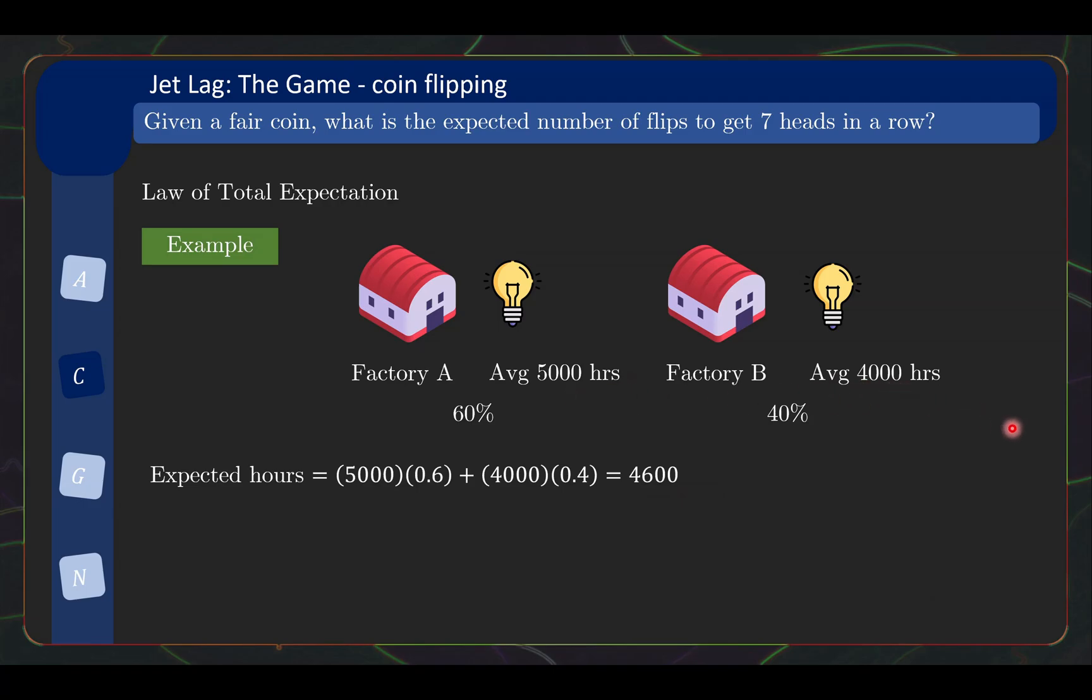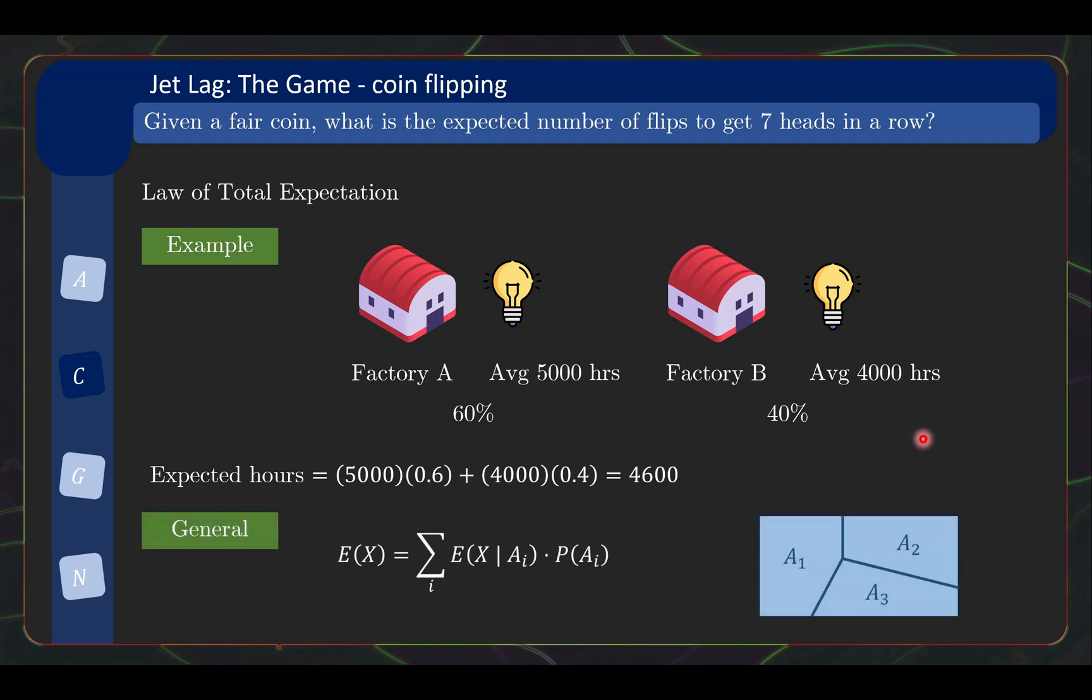So hopefully that is pretty believable. And in general, the law of total expectation says the following. So let's say this is your space of possible outcomes. In this case, outcome is whether light bulb is factory A or factory B. In general, you have outcomes A1, A2 and so on.